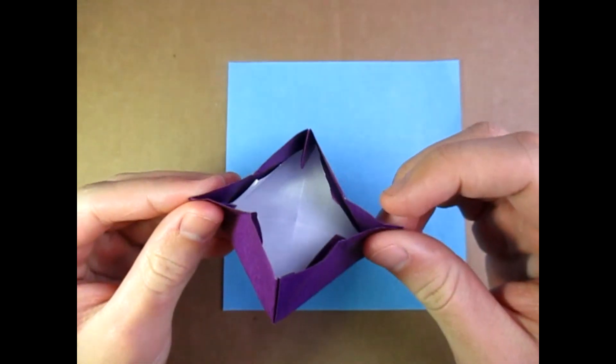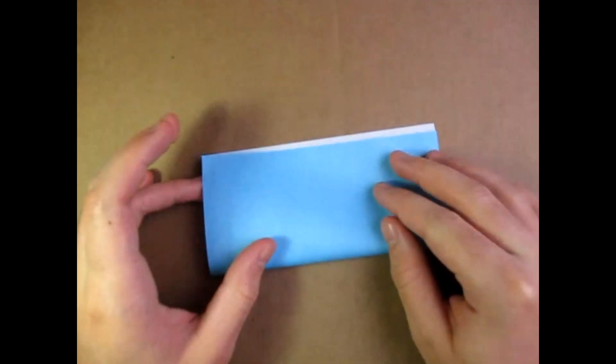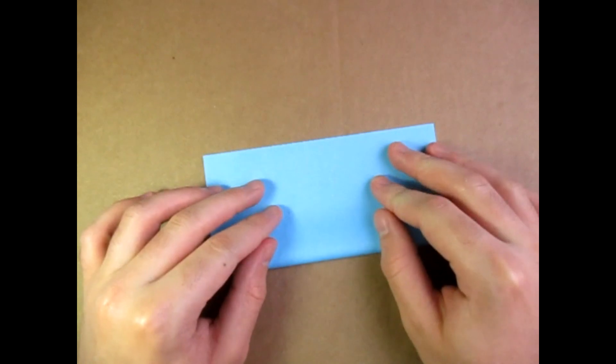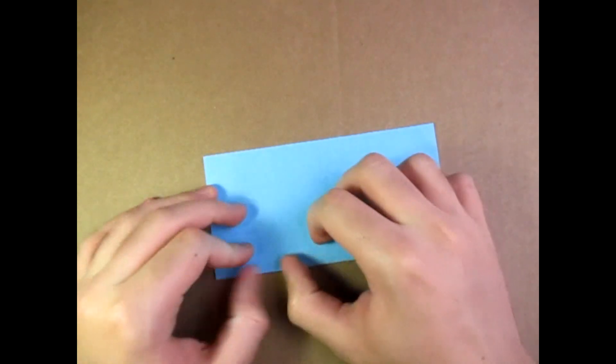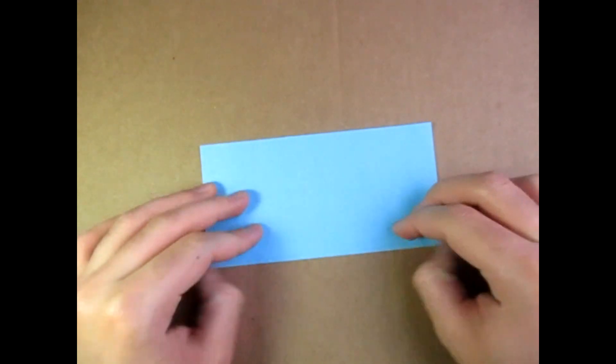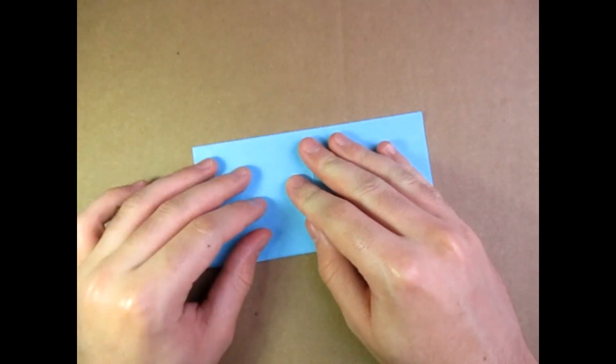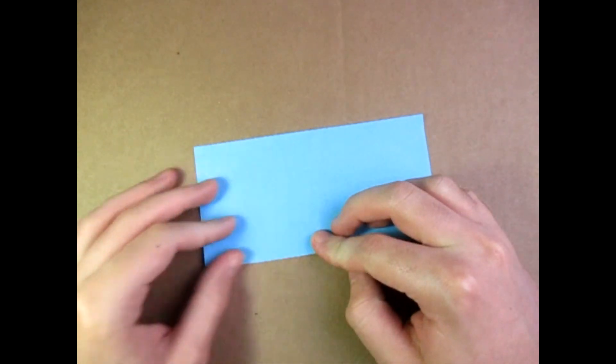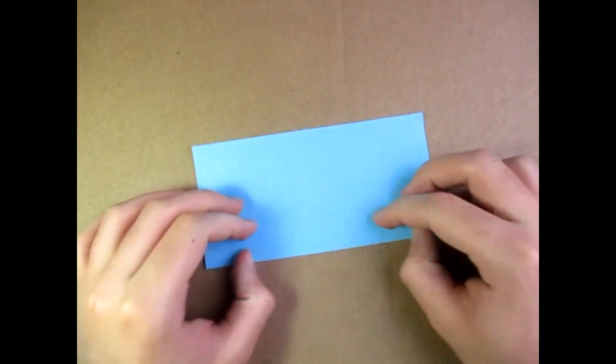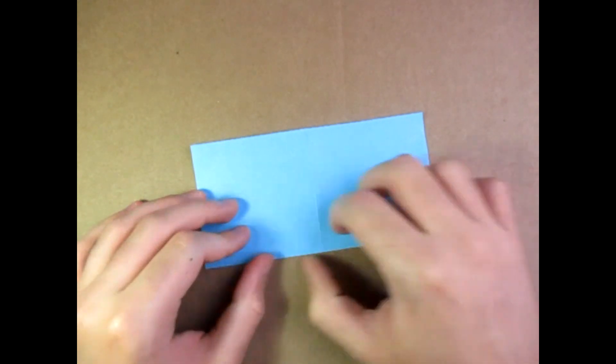Let's begin with the white side up and we're going to fold in half. Okay, unfold and fold in half this way. This is a pretty simple model, so if you're folding then this is a good model.